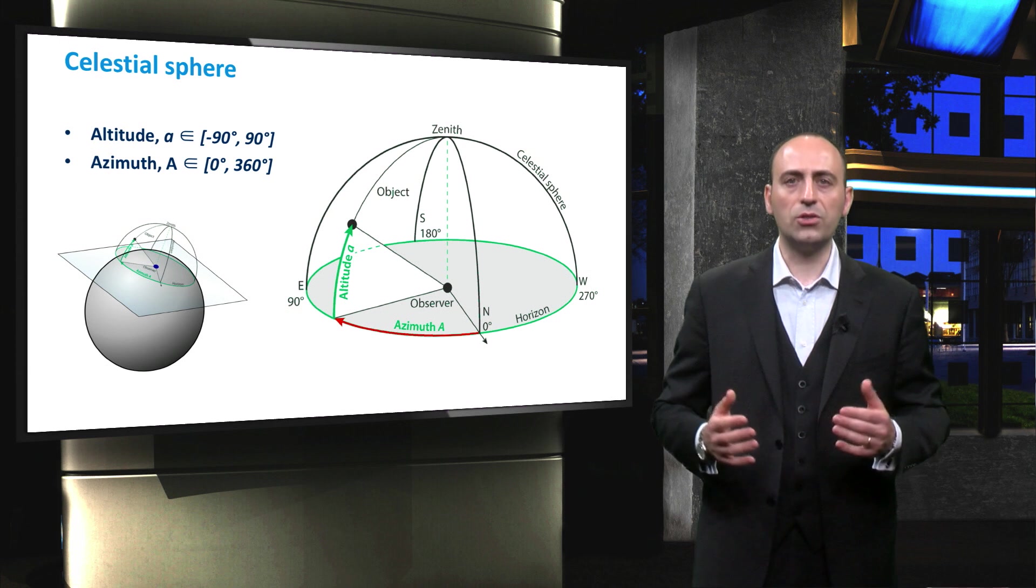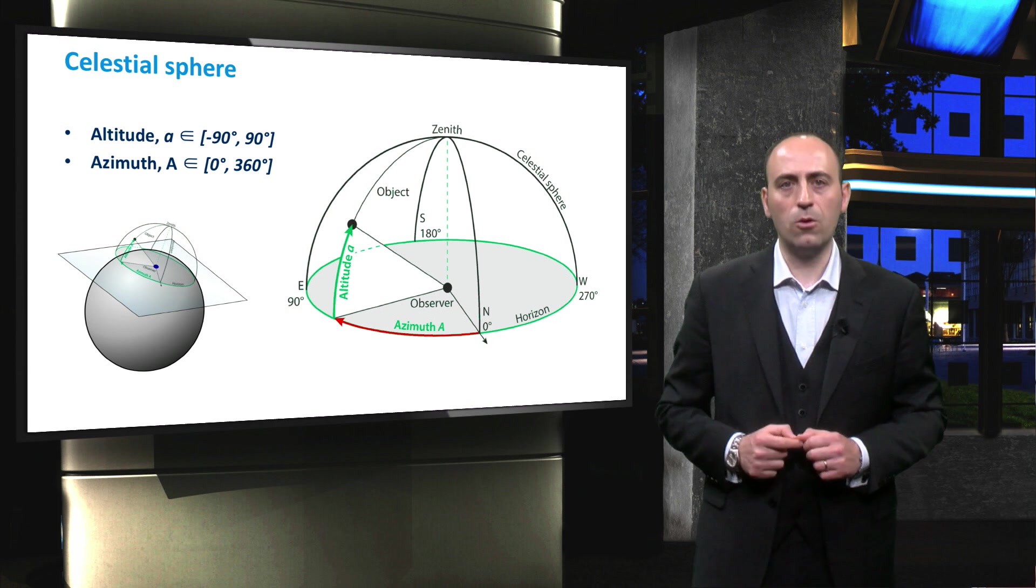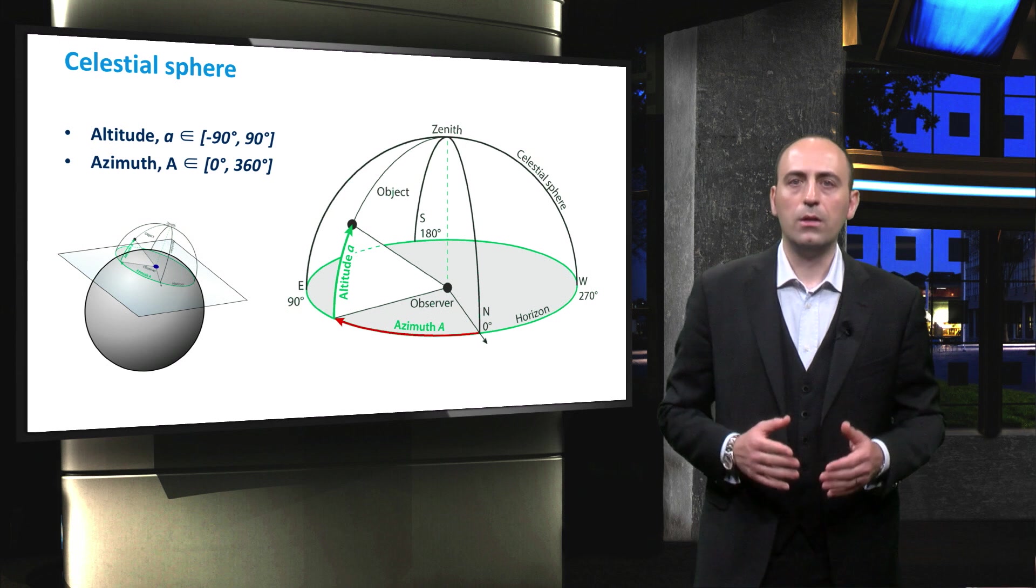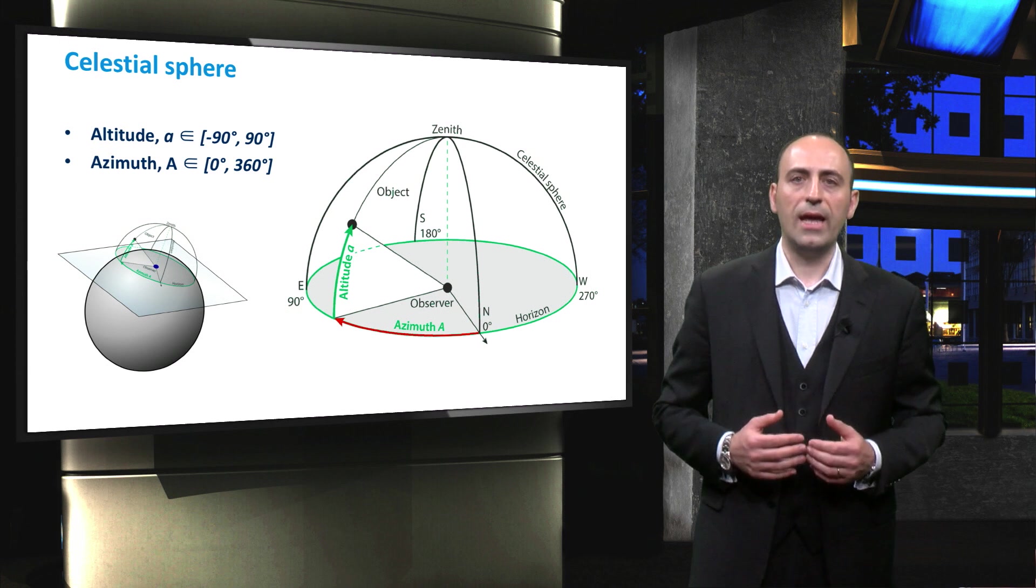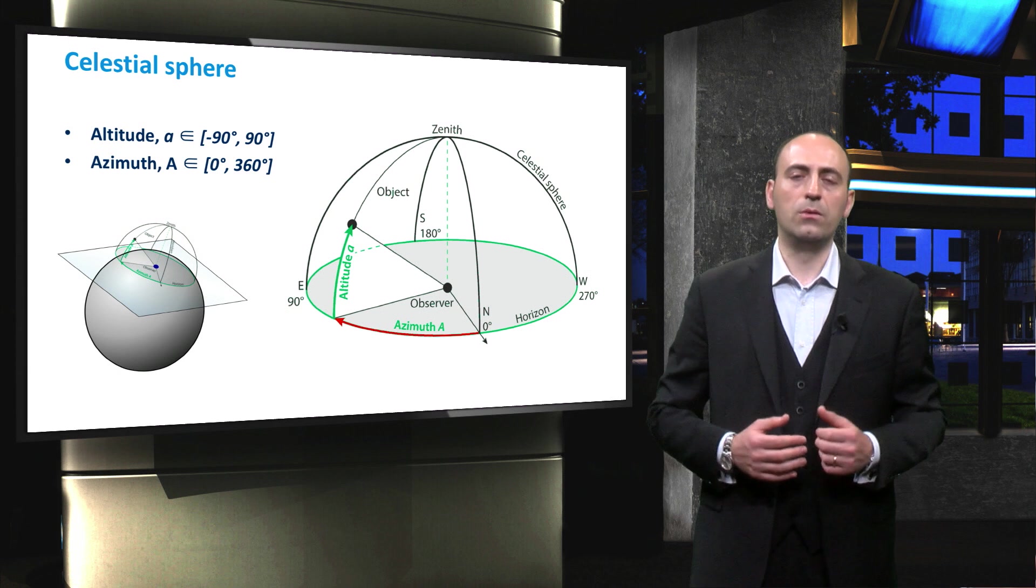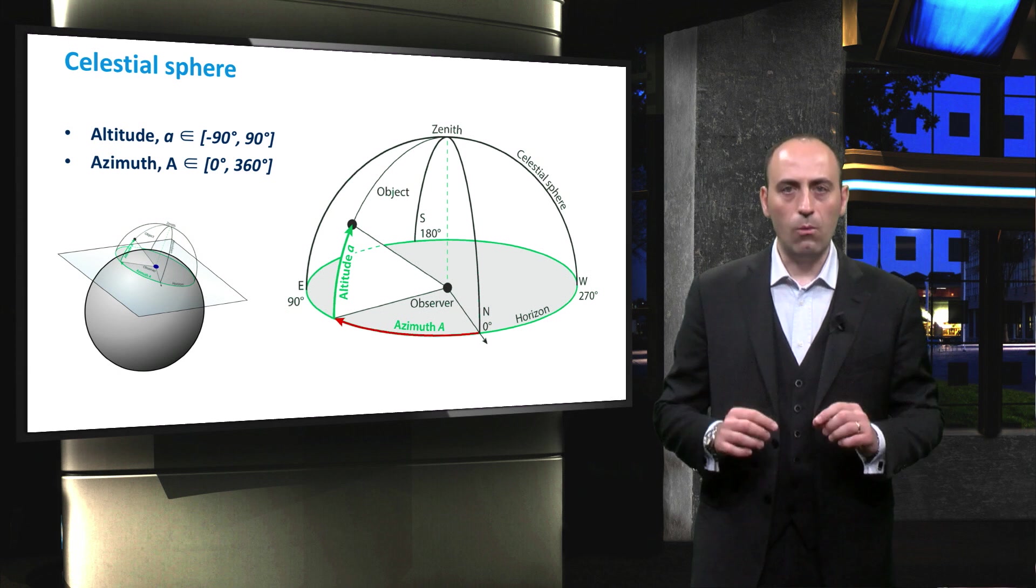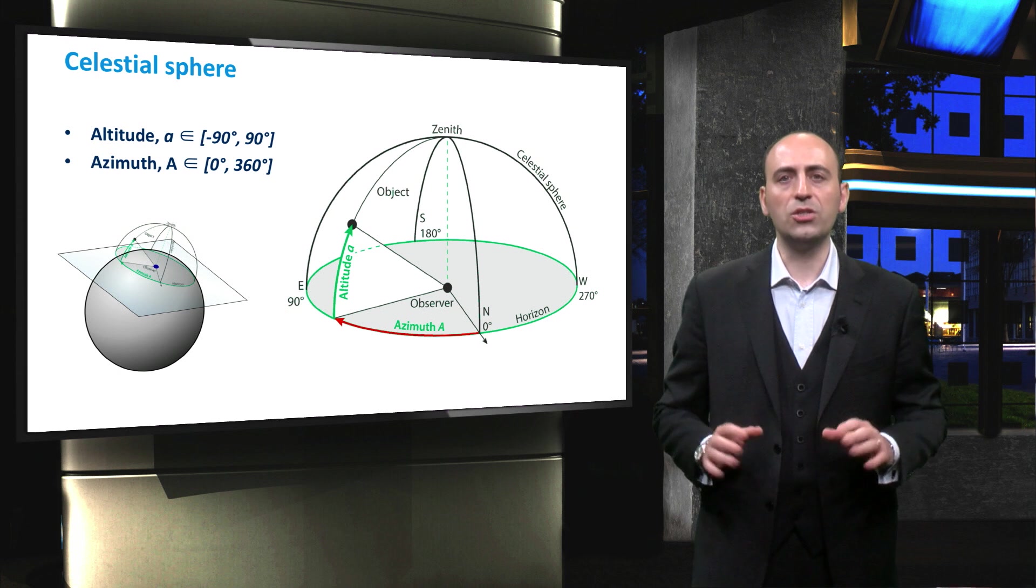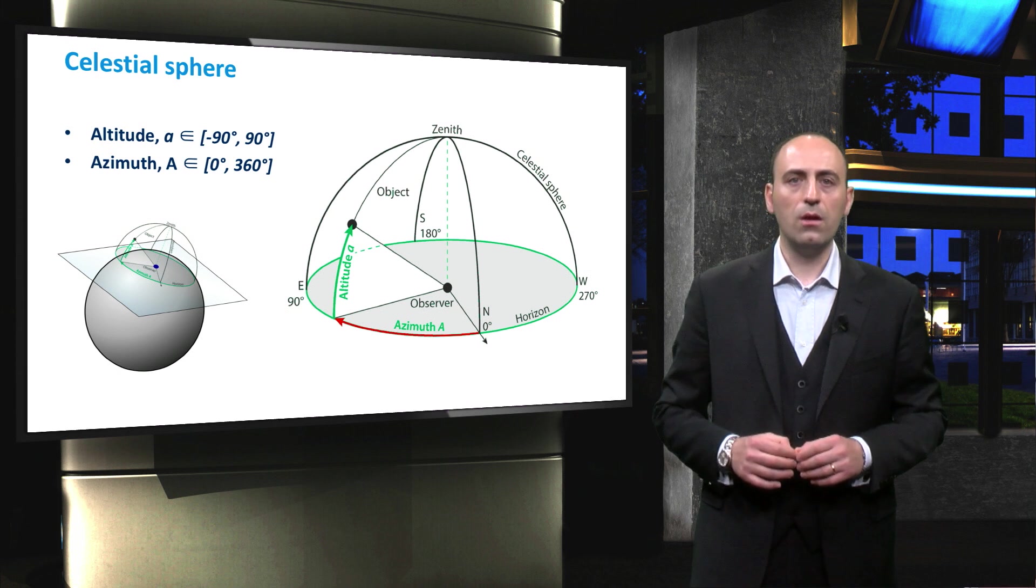But note that different conventions are also used by the PV community. For example, the south might correspond to 0 degrees and the angles might be counted westward. To be clear, from now on, we will use only the convention where A, capital, is equal to 0, corresponding to north. These two sets of coordinates, azimuth and the altitude of the Sun with respect to the observer, is very important because they are input parameters together with the date and time to calculate the solar position in the sky.